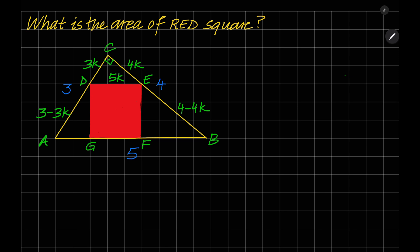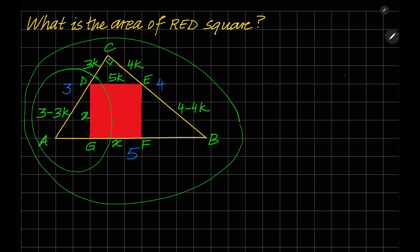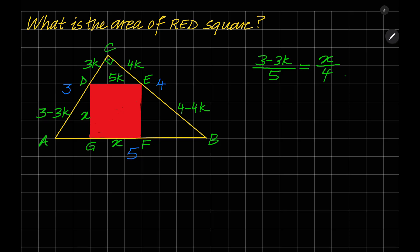Let the length of one side of the square be X. Using the similar triangle rules, considering these triangles, we get: (3 minus 3K) over 5 is equal to X over 4.